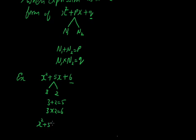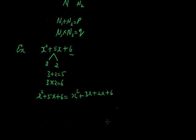Their product, 3 into 2, equals the constant term, that is 6. So x squared plus 5x plus 6 can be written as x squared, and 5x can be written as 3x plus 2x, because we are splitting 5 into two terms, 3 and 2. So 5x becomes 3x plus 2x plus 6. Now from the first two terms, we take x common, and in the bracket we are left with x plus 3.